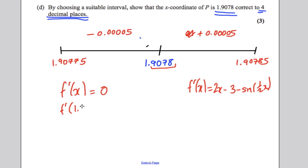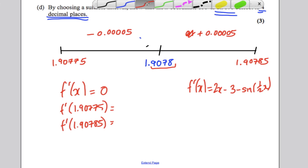So we're working out f dashed of 1.90775 and we're working out f dashed of 1.90785 and hopefully we'll get a change of sign doing that. So 2x subtract 3 subtract sine of a half x, and we're calculating that at the value 1.90775 and we get ourselves a negative number, and we calculate that at 1.90785 and we get ourselves a positive number.